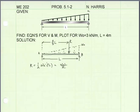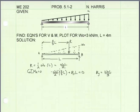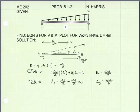Next, I'll solve for the reaction forces by summing moments at A equal to zero to solve for the reaction force at B. The resultant force acts in a negative direction with a moment arm of two-thirds L, plus the reaction force BY times its moment arm L, equals zero. Solving gives BY equal to W naught times L divided by 3. Summing forces in the Y direction, the reaction at A minus W naught L over 2 plus BY equals zero, giving the reaction at A equal to W naught times L divided by 6.